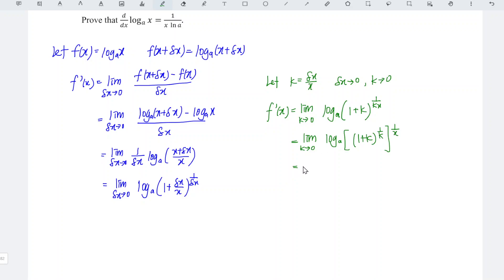Apply the logarithm power law to bring down the exponent. So we have limit as k approaches 0 of 1 over x times log to the base a of 1 plus k to the power of 1 over k.